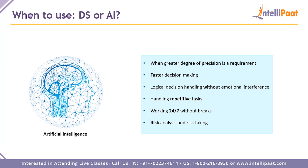When should you use artificial intelligence? AI is the requirement when you need precision that is out of this world — it is used to its full potential when achieving the greatest degree of precision. AI is also faster than humans in decision making, handles logical decisions without emotional interference, can handle repetitive tasks that challenge humans, works 24/7 and 365 days without breaks, and performs better risk analysis and risk-taking than humans at this point in time.